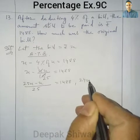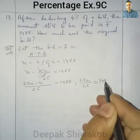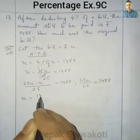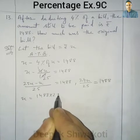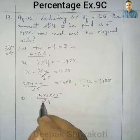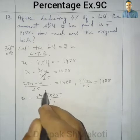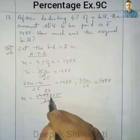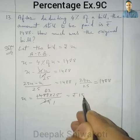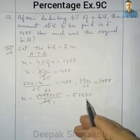So 24x by 25 equals 1,488. Therefore x equals 1,488 into 25 by 24. Cancelling by 62 times: 62 into 25 equals rupees 1,550. So the original bill was rupees 1,550.